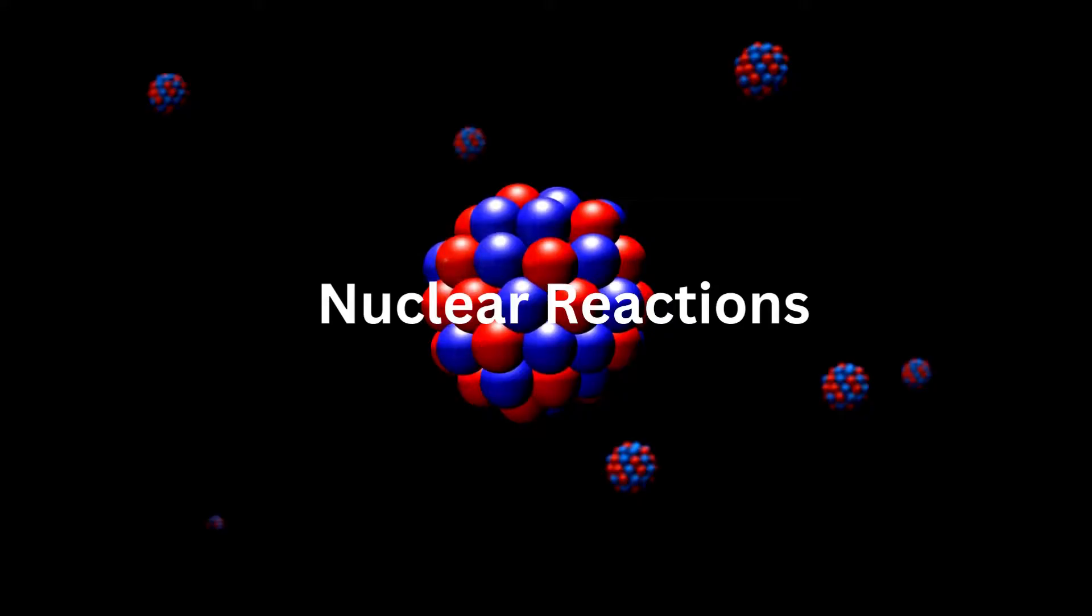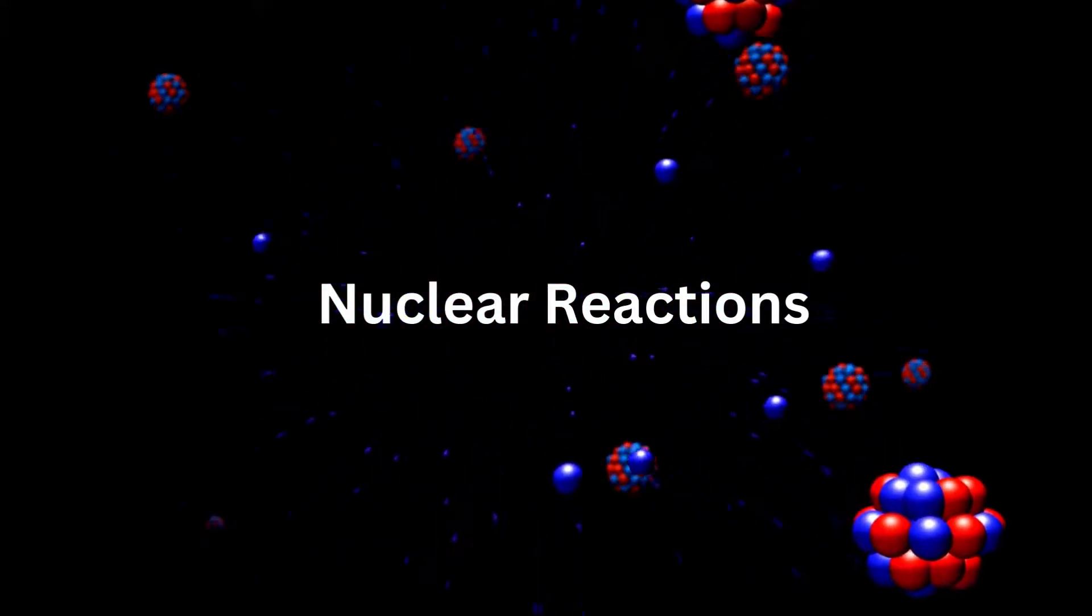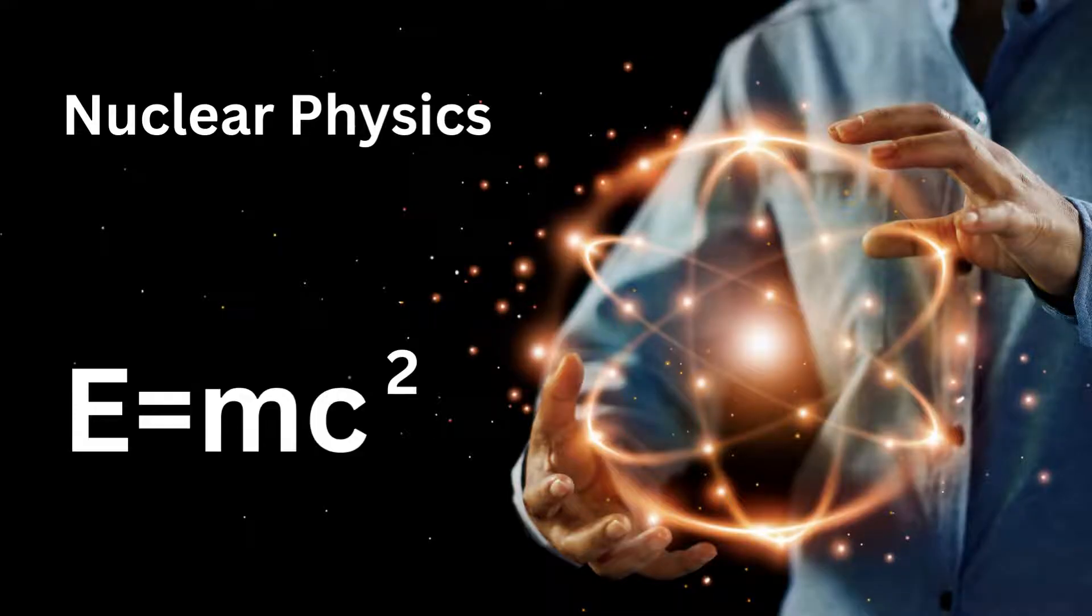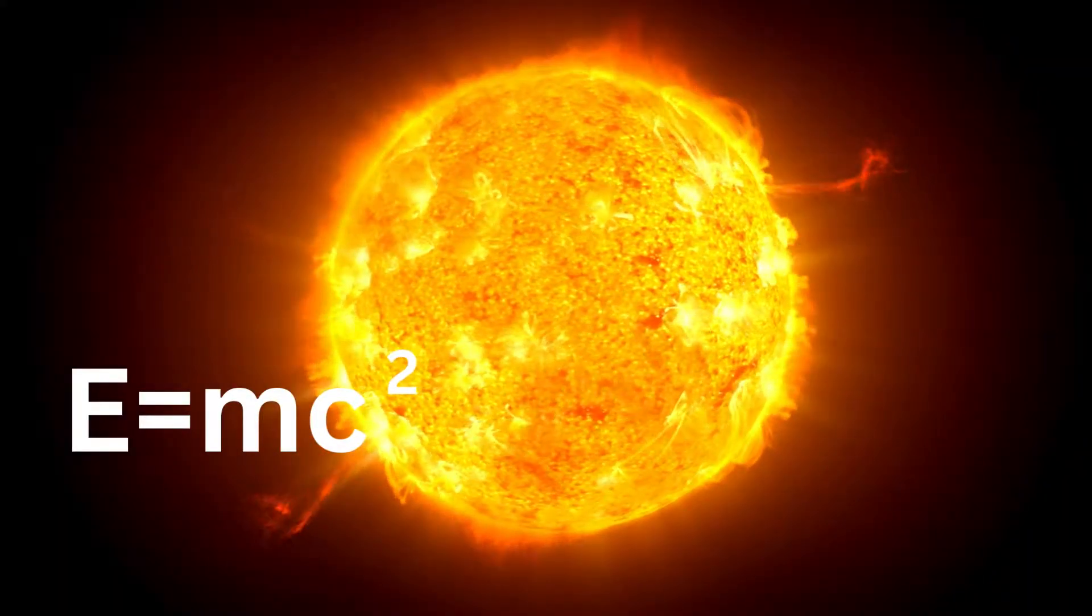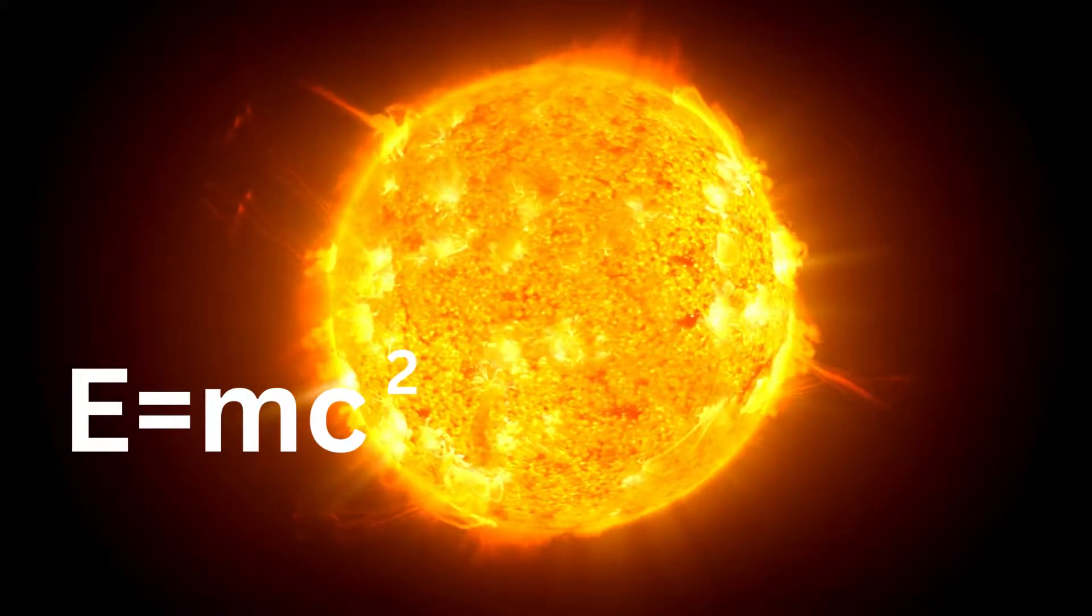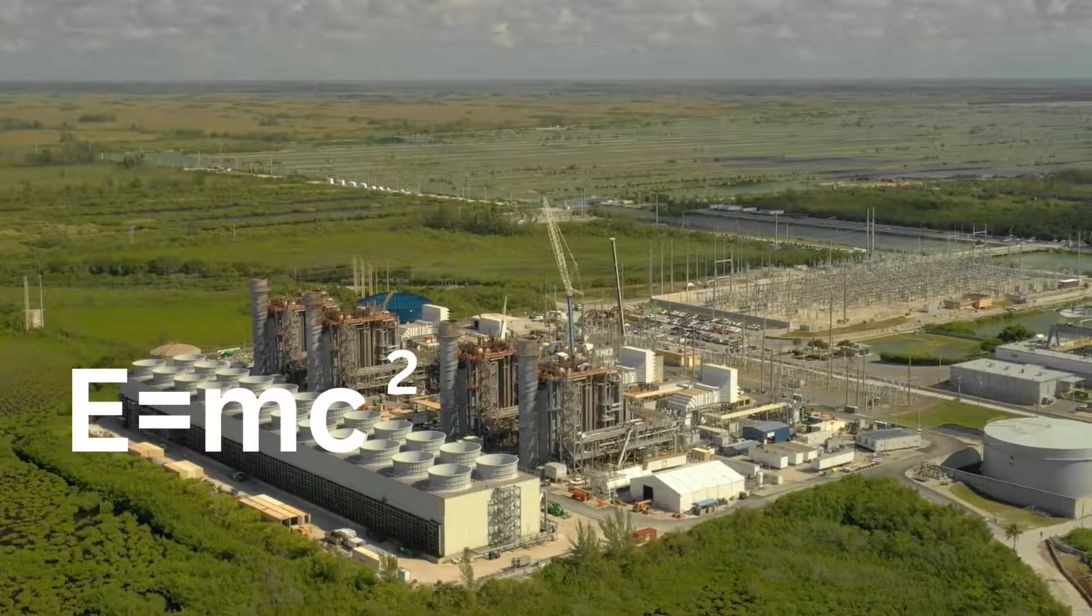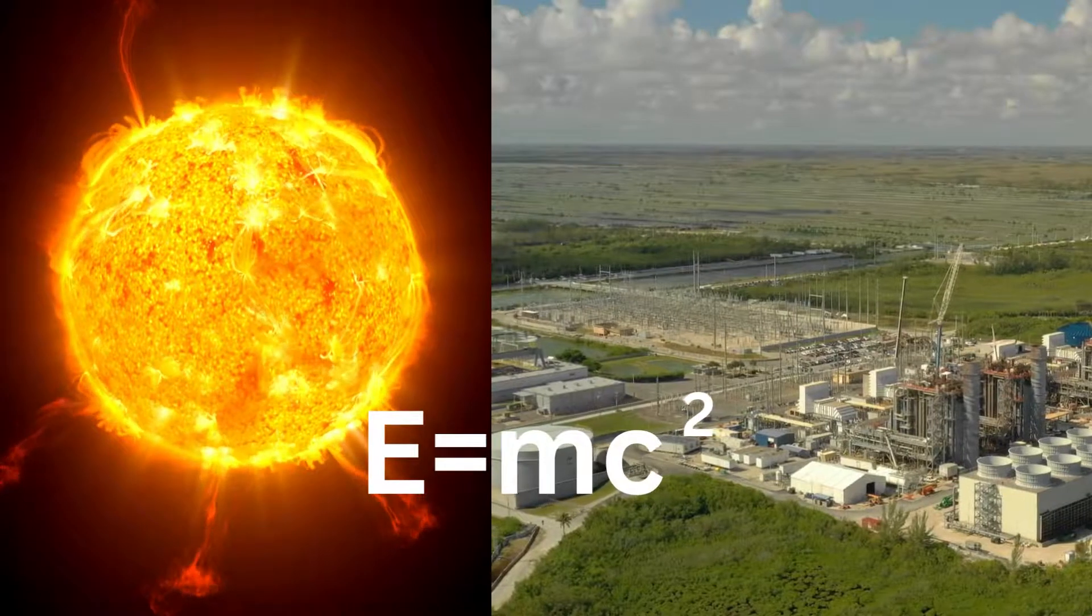4. Nuclear reactions. The nuclear physics field is also affected by the use of E equals mc squared. It explains the massive energy generated by nuclear processes, such as those that take place in the sun or at nuclear power plants. As dictated by this equation, even small amounts of mass converted into energy is responsible for the immense power released in these reactions.